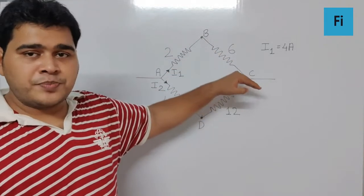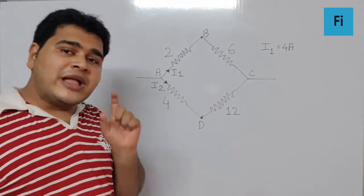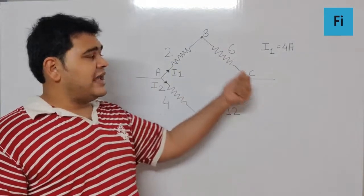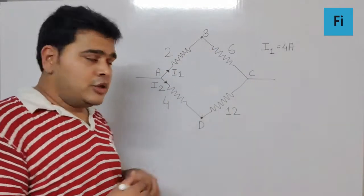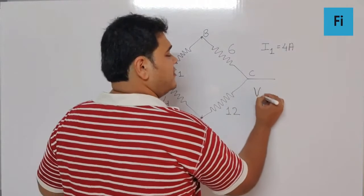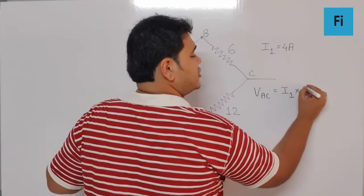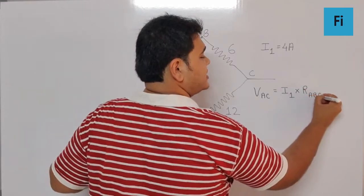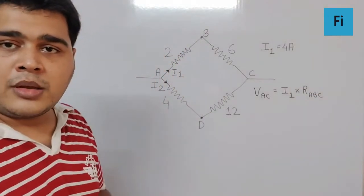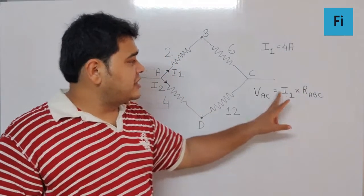So let's find the potential difference between point A and C via B. Can I say V_AC is I1 into R, the resistance between A, B, and C. That means I1 we know...